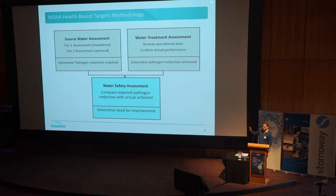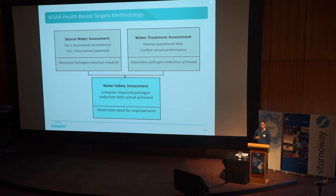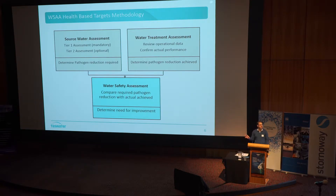This is essentially a graphic of how the WSAA health-based target methodology works. We start on the left, which is the source water assessment — that's really where you're quantifying your pathogen risk. There are two approaches: tier one and tier two. In tier one, you're using E. coli as a surrogate for pathogen concentrations, while in tier two you're actually doing direct pathogen monitoring. Once you've determined your pathogen risk, you then go to the second phase and assess what your treatment process can do to make the water safe. You put both together and say: where am I now — am I safe or am I not?